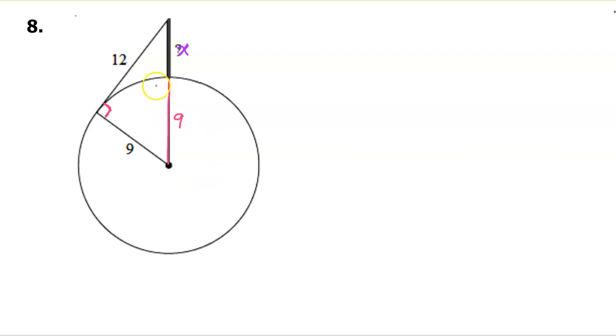So this is a right triangle, so the Pythagorean theorem has to hold. I'm just going to use the Pythagorean theorem that says leg squared plus leg squared is equal to the hypotenuse squared. The legs are the 12 and the 9. So we have 12² + 9² equals the hypotenuse. The hypotenuse is x plus 9, so (x+9)².